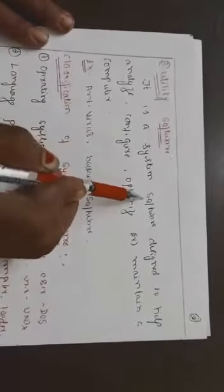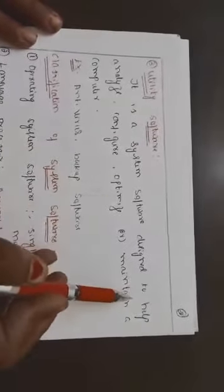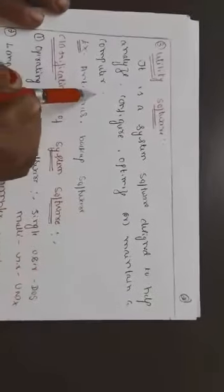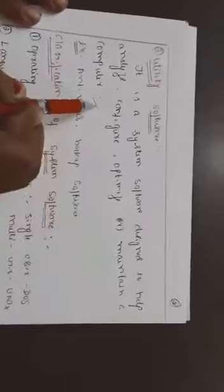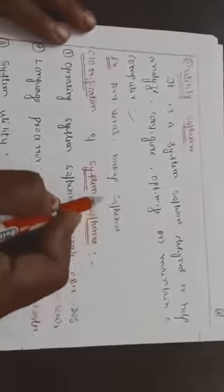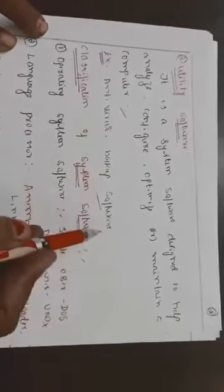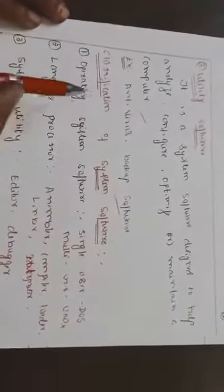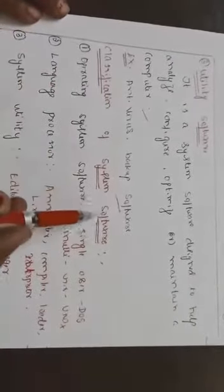What is utility software? It is system software designed to help analyze, configure, optimize or maintain a computer. It is also one type of software. Examples are antivirus software and backup software. I already explained in the classroom regarding these types of software and classification of system software.